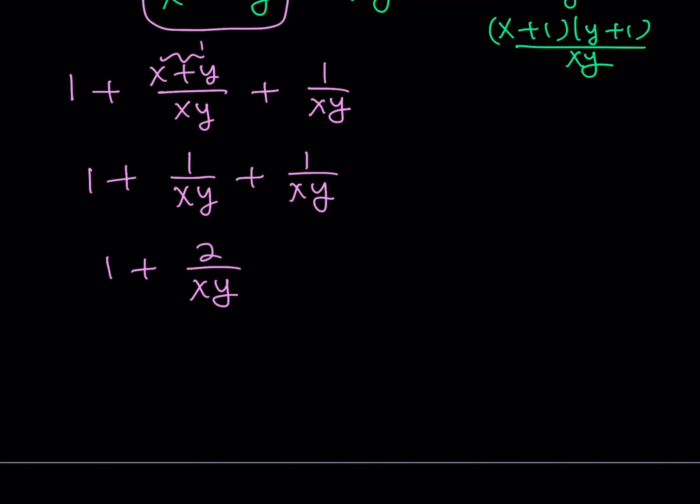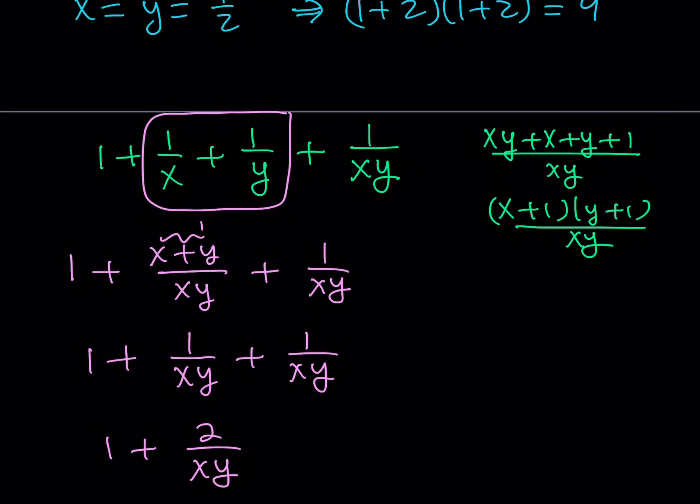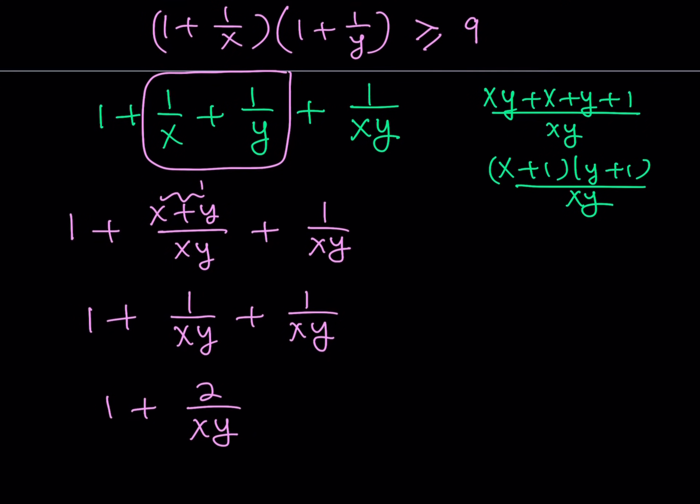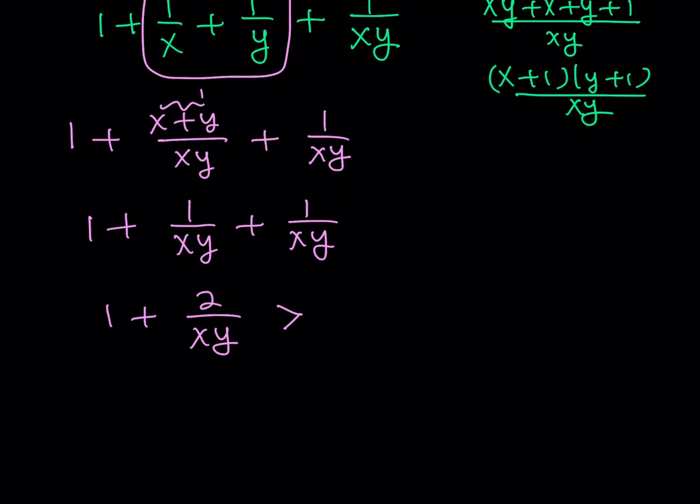And that gives me 1 plus 1 over xy plus 1 over xy. And as you know, this is equal to 1 plus 2 over xy. So, what am I trying to do? I'm trying to prove that this expression here, which comes from 1 plus 1 over x times 1 plus 1 over y, is greater or equal to 9. So, my expression here is obviously much better than the original one.